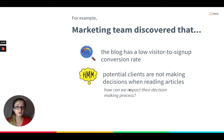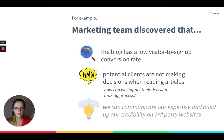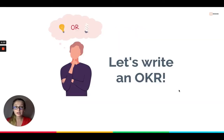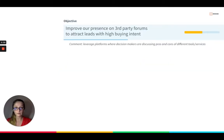The next question is: how can we impact their decision-making process? Let's say this marketing team has already decided on their approach — they say we can communicate our expertise and build credibility on third-party websites, groups, or forums. So let's write an OKR to address that particular focus area.